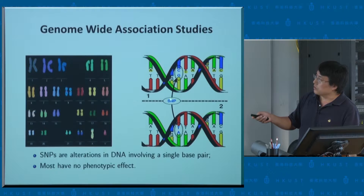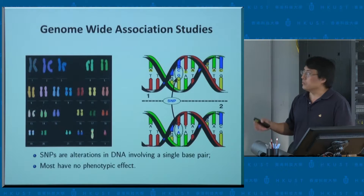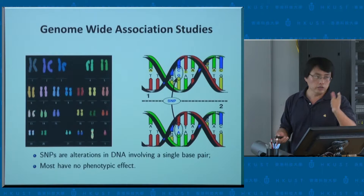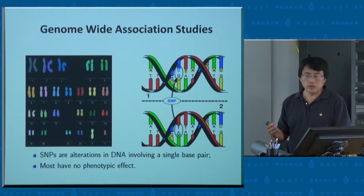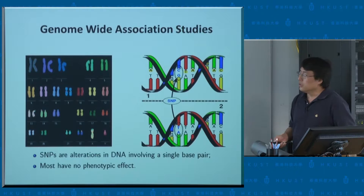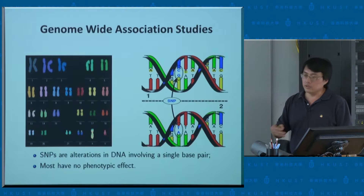This is called a SNP — an acronym for single nucleotide polymorphism. In my talk it's nothing more than a marker or a random variable — people may have different discrete values for this variable, like C or T. SNPs, or single nucleotide polymorphisms, are alterations in DNA involving a single base pair. In total, people today know about more than 10 million such single polymorphisms in the human population, and every single base may have a chance to be mutated.